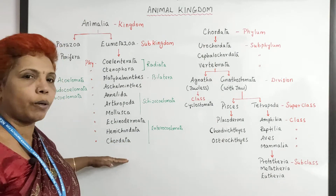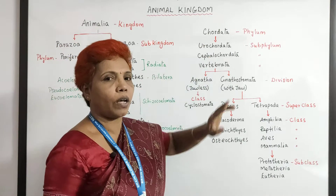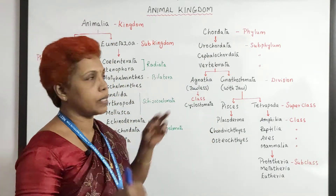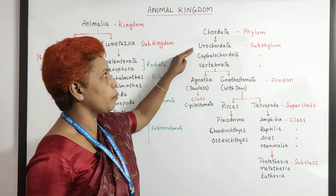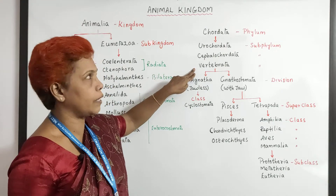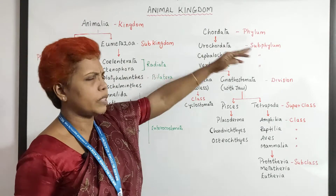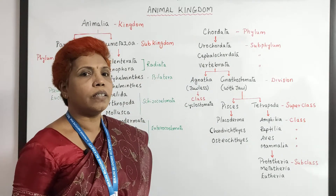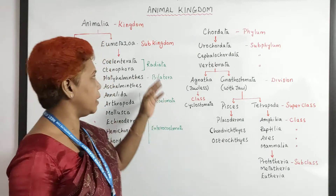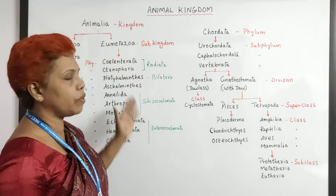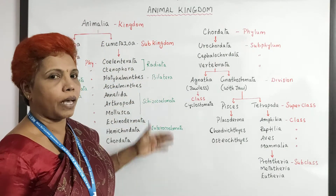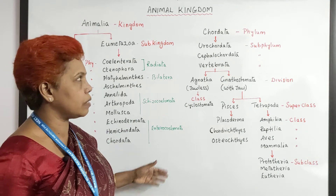When you talk about Chordates, the Chordate phylum has got three subphylums: Urochordata, Cephalochordata, and Vertebrata. In Chordata, we have the endoskeleton, while the earlier groups are all invertebrates with only an exoskeletal system.